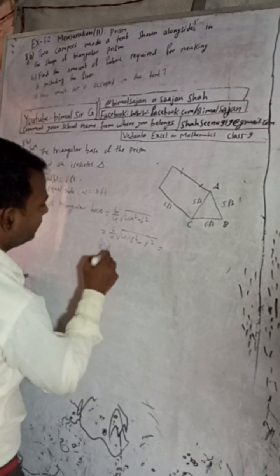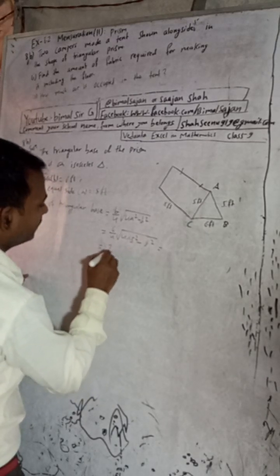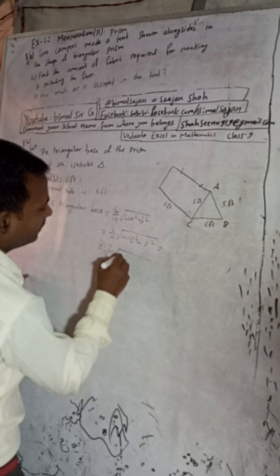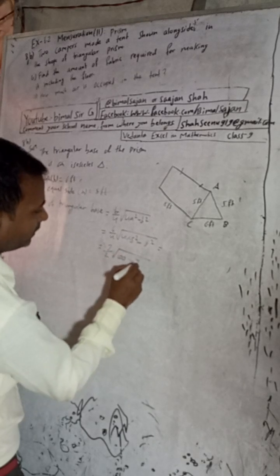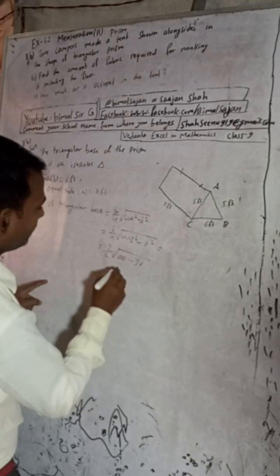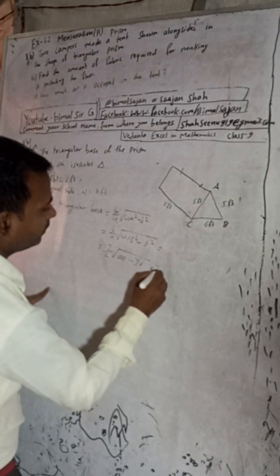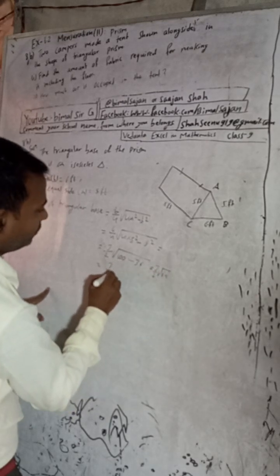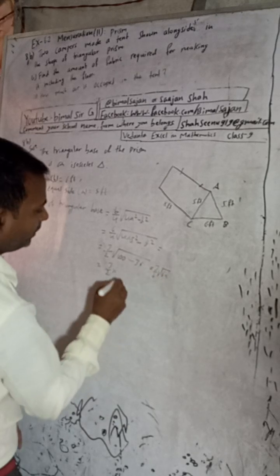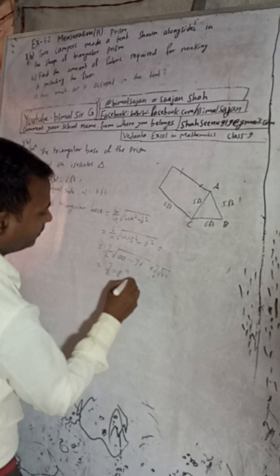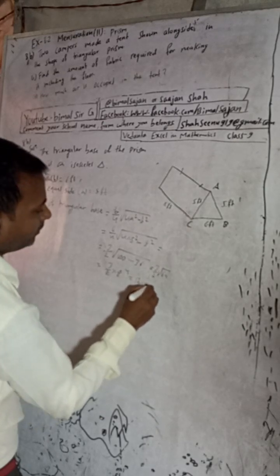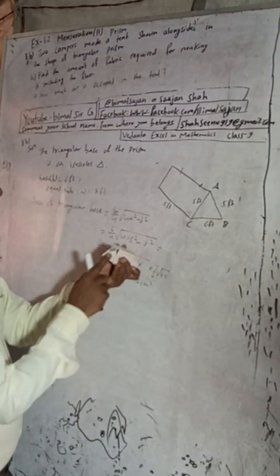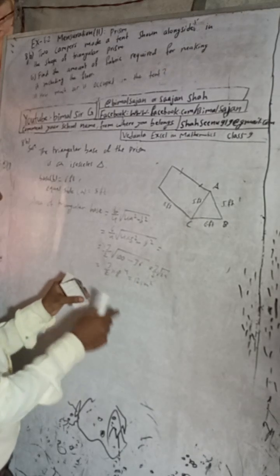Simplifying: 6 divided by 4 gives 3 over 2. Under the root, 4 × 25 = 100, and 100 − 36 = 64. The square root of 64 is 8. So the area equals 3 over 2 times 8, which equals 12 square feet. We have found the area of one triangular base as 12 square feet, and there are two such bases.